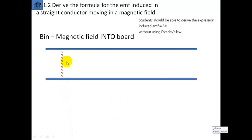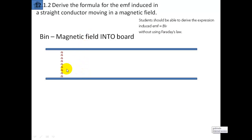Let's just imagine this. We have a magnetic field passing into the board — into the paper, or into the computer screen. And we have these electrons. The electrons are going to move to the right.